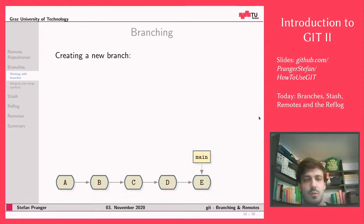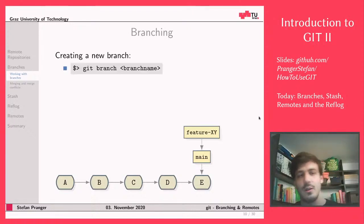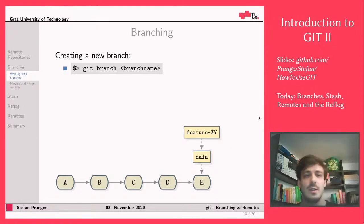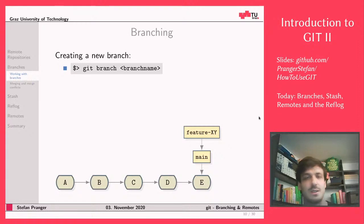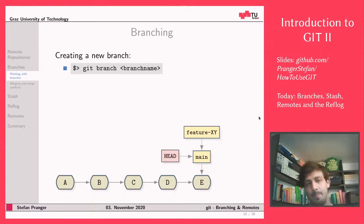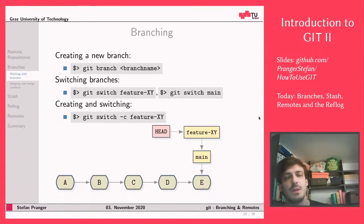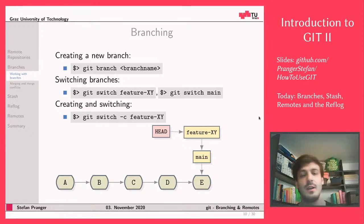In order to create a new branch, we simply call the git branch command with the new branch name. What that actually does - as you can see in the graphics on the slide - is git branch will only create a new reference to the commit you're currently on. So if we were on branch main and called git branch feature-xy, it would just create the new reference, nothing else. In order to switch to that different branch, we're going to use the git switch command. After we have created the branch and switched to it, our HEAD is going to point to that very new branch.